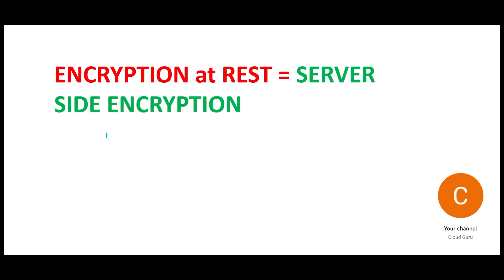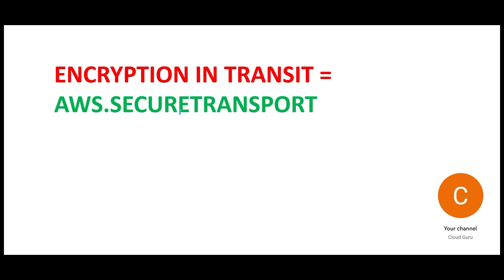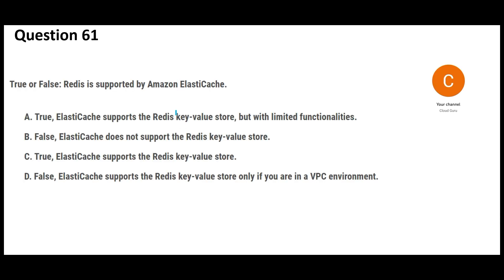Remember this rule: encryption in transit happens through TLS protocol; encryption at rest happens through AES-256 protocol, or you can also use KMS keys. You can use server-side encryption for encryption at rest. For encryption in transit, check the secure transport value — if it is false, the data would move unencrypted.